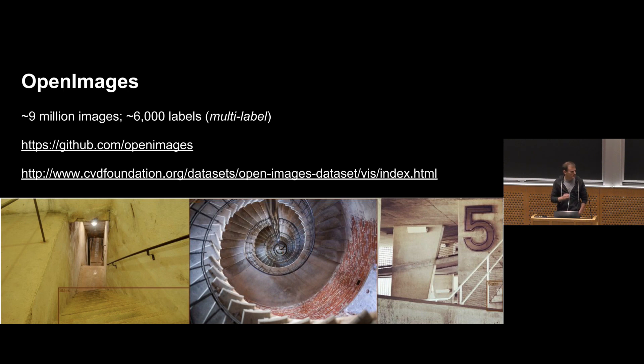So Open Images was released, I think, a year or two ago. It's got about 9 million as opposed to 1 million images. The base dataset has 6,000 labels as opposed to 1,000 labels. This is also multi-labeled, so if there's a person holding a rugby ball, you get both person and rugby ball in the dataset. It's got all kinds of classes, including stairs here, which are lovely illustrated. You can find this on GitHub. It's a nice dataset to play around with.